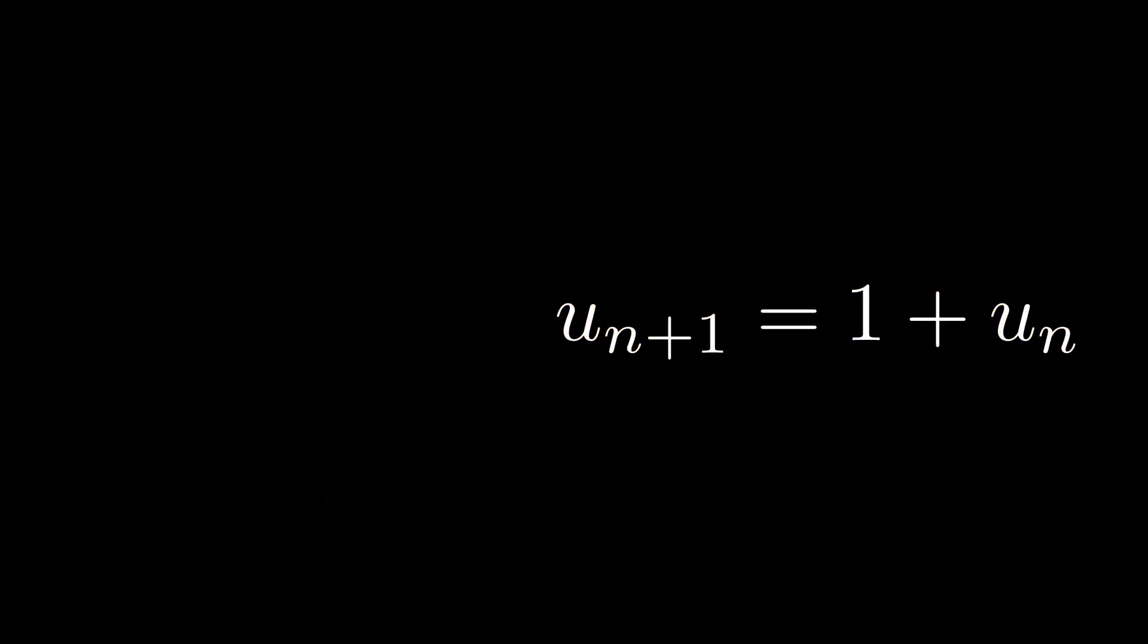For example, let's consider a new sequence of numbers, such that u(1) is 1 and u(2) is 2, and so on. It's quite easy to deduce that the relationship between terms in this sequence can be described by the next term being one more than the current term.